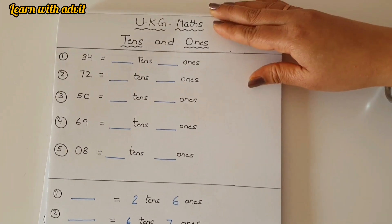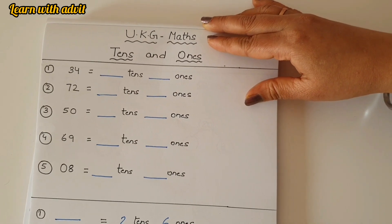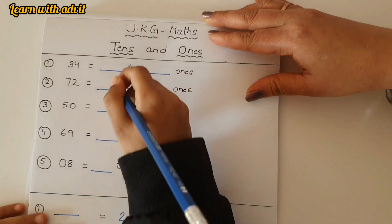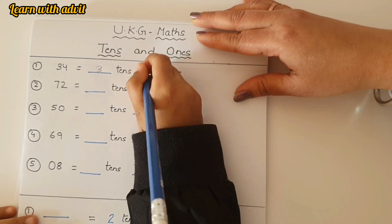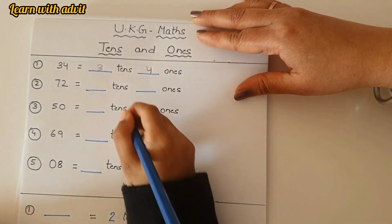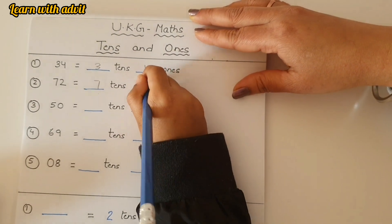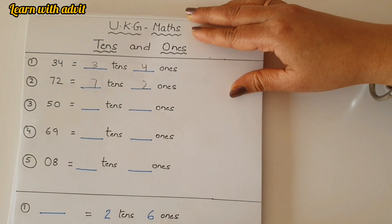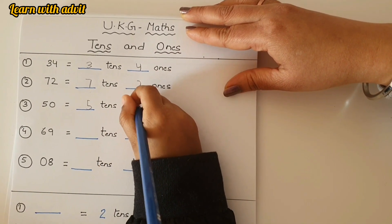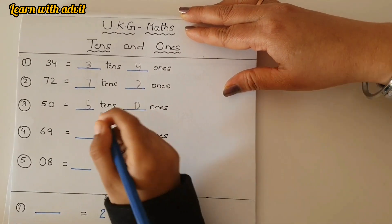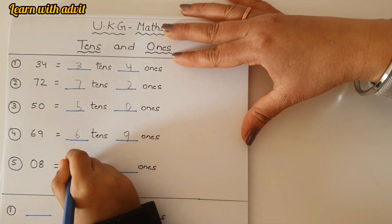This is the tens and ones worksheet, your favorite, right? Yes. 34, you have to write tens and ones accordingly. 34 has three tens and four ones. 72 has seven tens and two ones. 50 has five tens and zero ones. 69 has six tens and nine ones. 08, it's a tricky one, zero tens and eight ones.